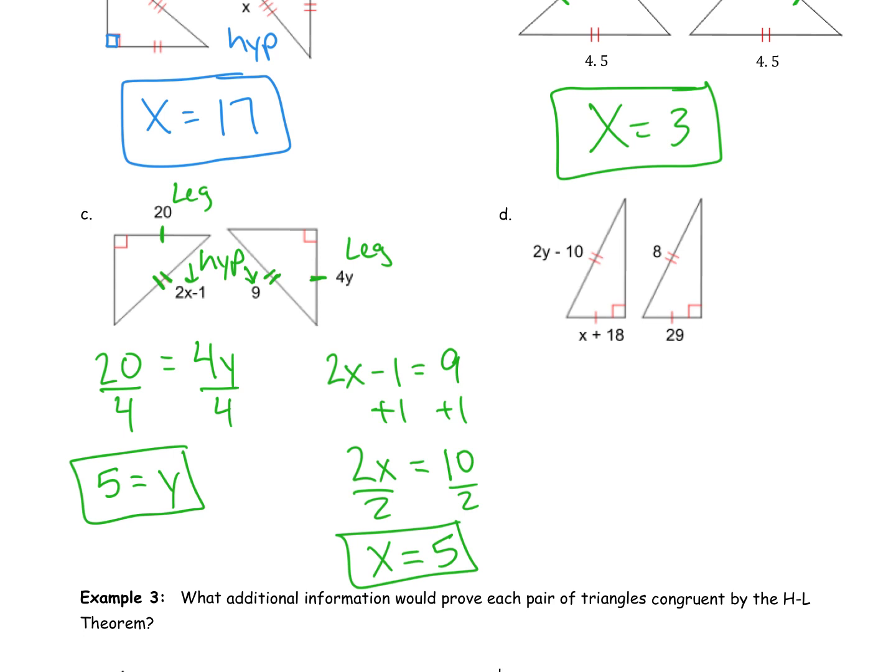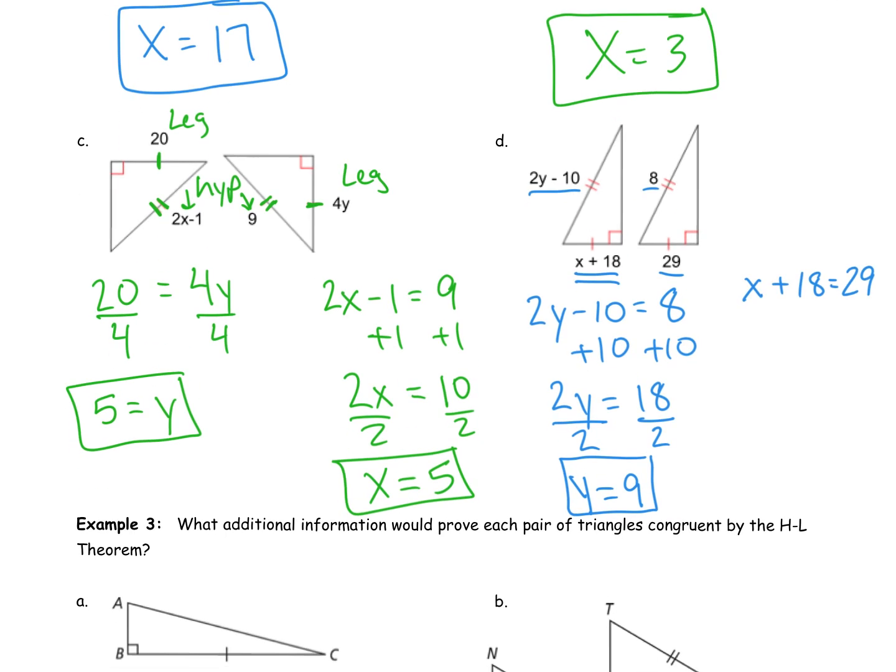Looking at letter D, this one will be even easier because the triangles are straight up aligned, which is really nice for us. That 2y minus 10, what's that equal to? The 8. 18. Right? So you add 10 to both sides. Y equals 9. 2y is equal to 18. Divide by 2, like you said. Now, the x plus 18, what does that equal to? 29. Right. Yeah, no problem. Subtract the 18. Yep, we'll go ahead and subtract the 18. x equals 11.